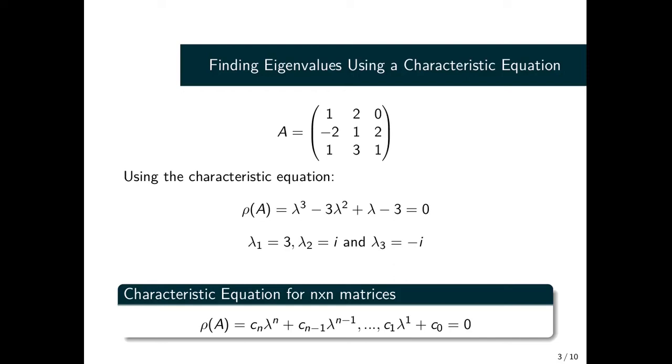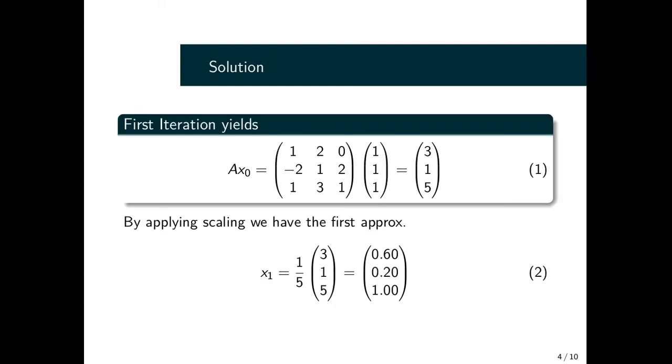Let's now solve the problem using the Power Method. This is an iterative technique. We have our matrix A and our initial guess x₀, which we multiply to get a column vector. We pick, in order to perform the scaling, the dominant value which is 5, and we use it to normalize, which gives rise to equation 2. This column vector is 0.60, 0.20, and 1.00.